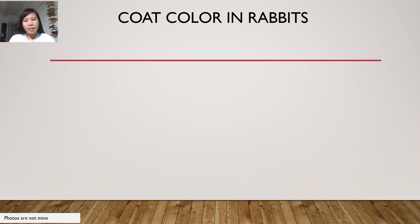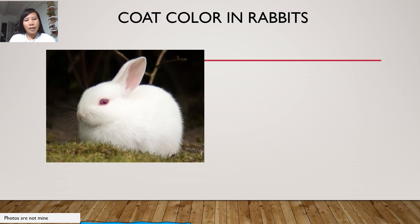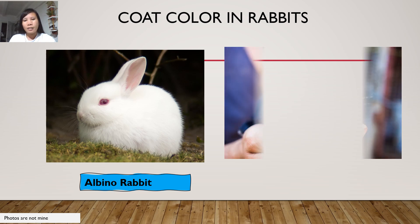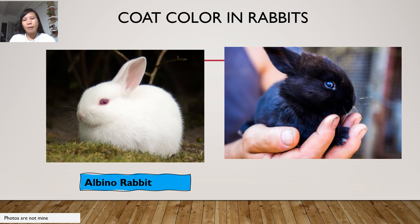Still, another type of allele that controls the coat color in rabbit is the allele for albino rabbit giving its white color and the allele for the black rabbit giving its black color.